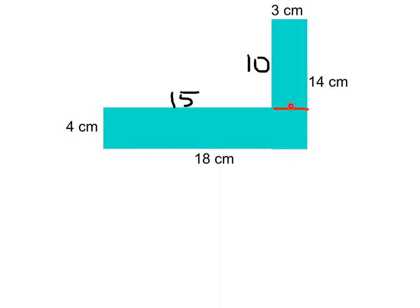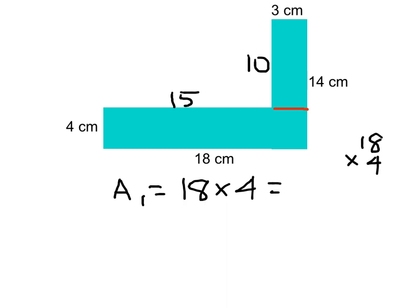Let's figure out the areas for each of the two rectangles we've divided this figure into. The side labeled 15 is only a partial side, so we do not use it. However, 4 and 18 completely describe the first rectangle — it's an 18 by 4 rectangle. So for that first area, that's 18 times 4. 18 times 4 is 72 square centimeters.